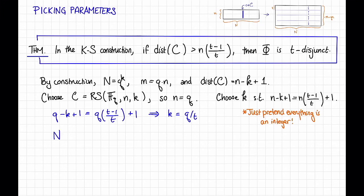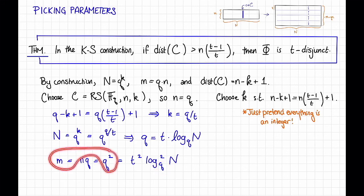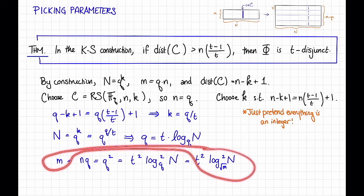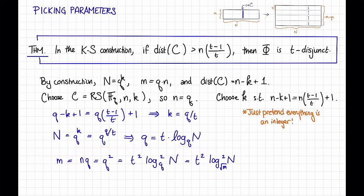It won't matter at the end of the day for the big O answer that we're going to get. Okay, so capital N is equal by definition to q to the k, which is equal to q to the q over t. Rearranging this, this implies that q is equal to t times the log base q of n. Now we also have that little m is equal to n times q by definition, which is equal to q squared since we chose n equal to q. And plugging in this value of q, this is equal to t squared log base q squared of n. Now I want to get rid of this q and put everything in terms of t and n and m. So let's just observe that q is equal to root m because of that. So this is equal to t squared times the log squared of n base root m. And you can check that this equation implies that m is equal to big O of t squared log base t of n squared.